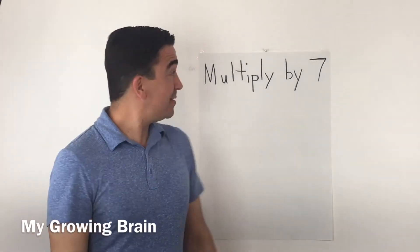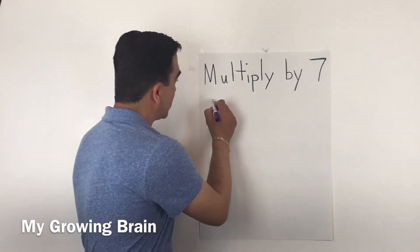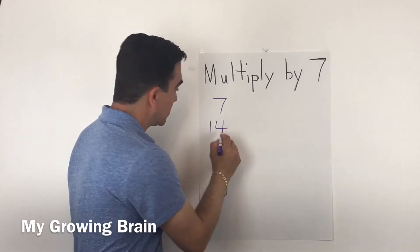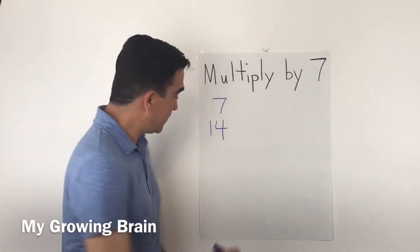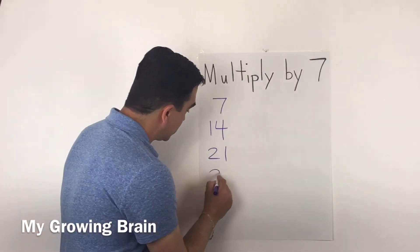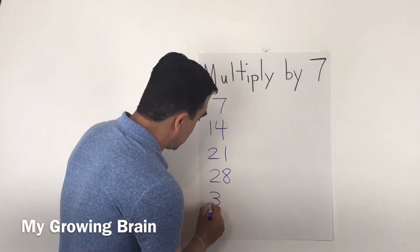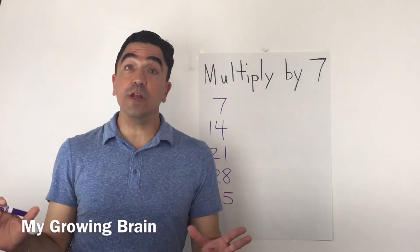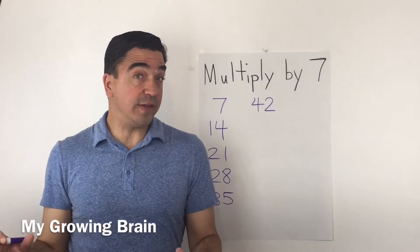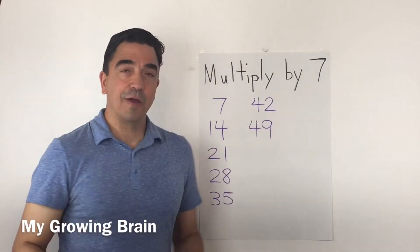I like to skip count. I'm gonna skip count by seven. Watch: seven, fourteen, twenty-one, twenty-eight, thirty-five, forty-two, forty-nine.